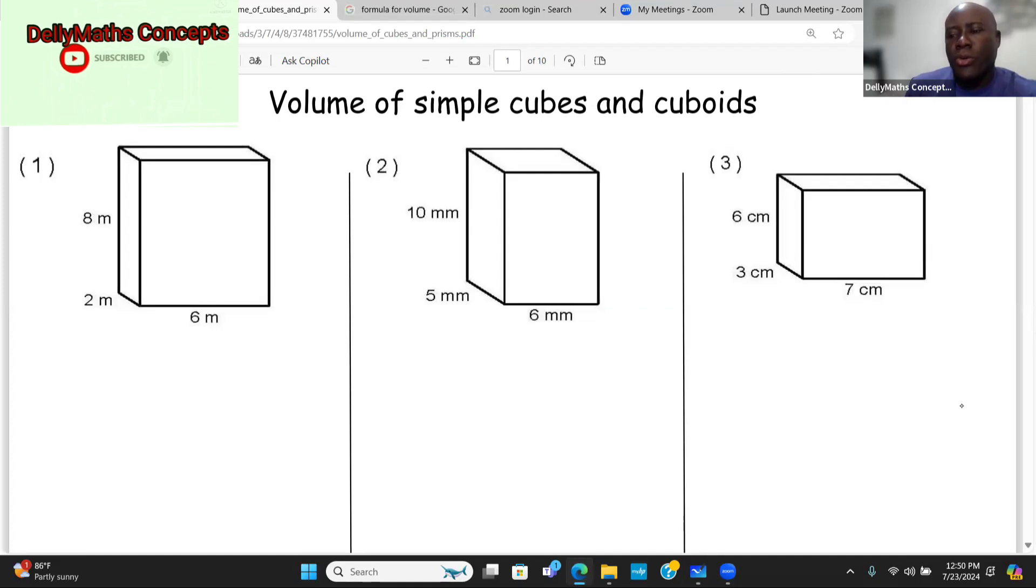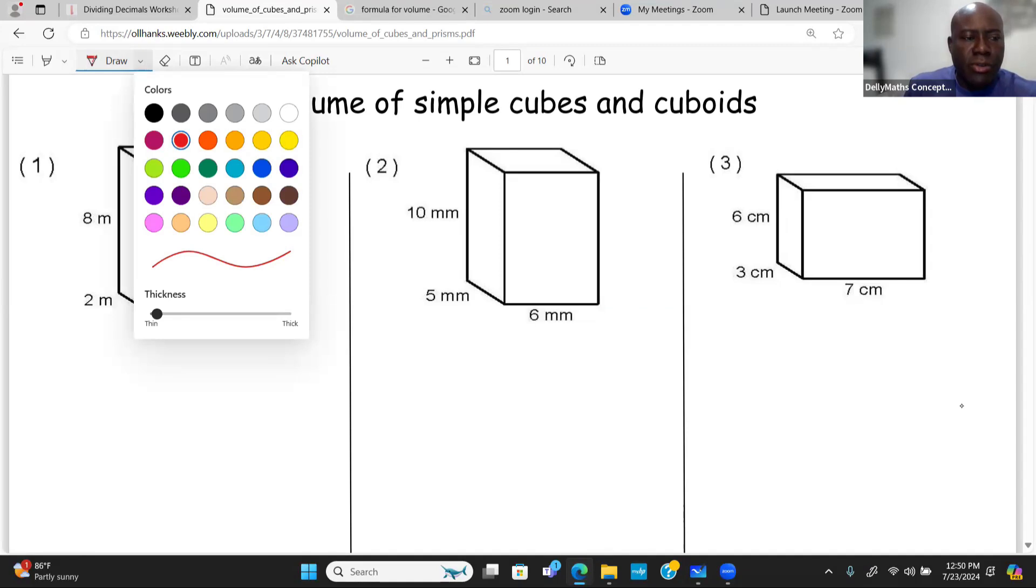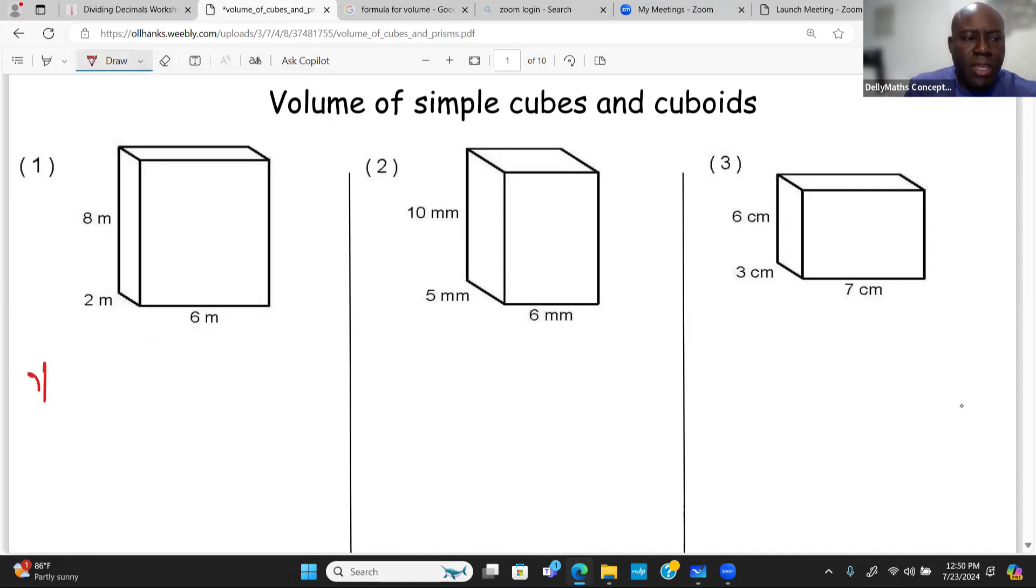So in finding the volumes of cubes and cuboids, we want to make sure that we remember what the formula is. It's basically a very simple formula. The volume is going to equal multiplying the length times the width.